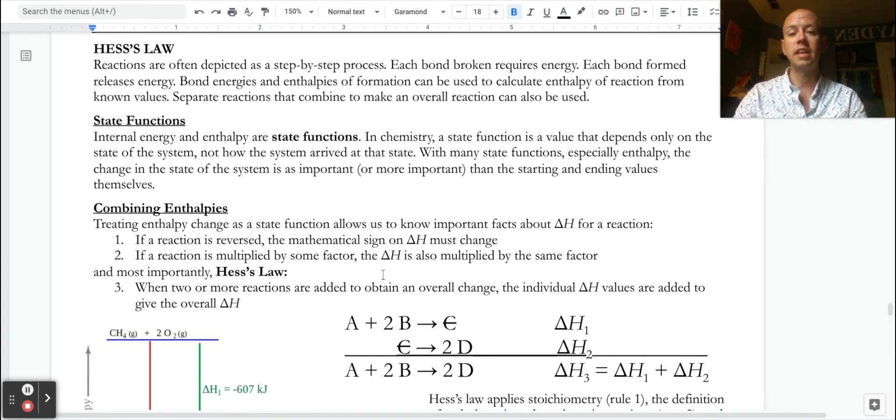Those two ideas are put together and applied in a concept called Hess's Law, saying that if I were to combine two or more reactions, and they can be combined to give an overall change or overall chemical reaction, the individual delta H steps that are added up give us the overall delta H.